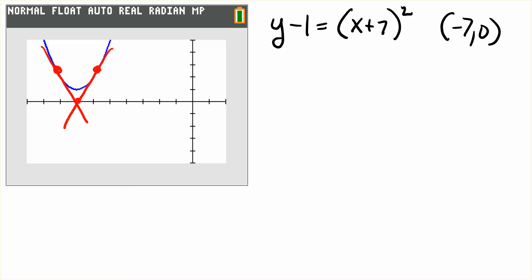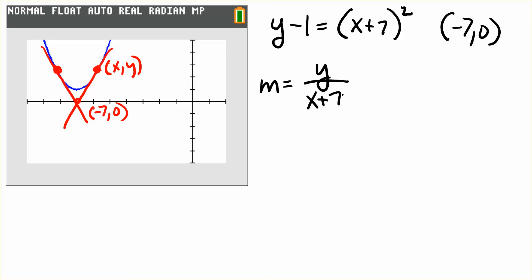The equation is going to look like this. We have this point negative 7 comma 0, and we'll choose either one of the points on the curve — we'll call that x comma y. The slope through those two points is going to be m is equal to the change in y, which is y minus 0, over the change in x, which is x minus negative 7, or x plus 7.